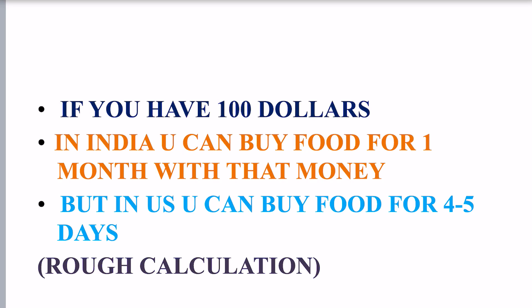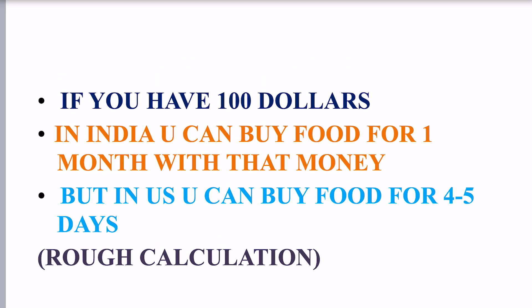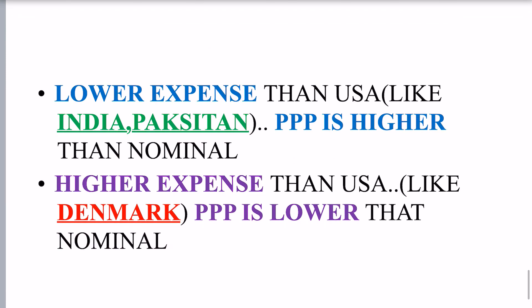That is why the nominal GDP of India is lower than the PPP. So if a country has lower expenses than the USA, like India and Pakistan, PPP is higher. Lower expenses than the USA means PPP is higher than nominal.